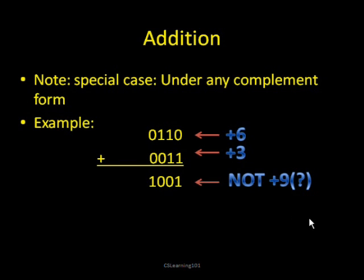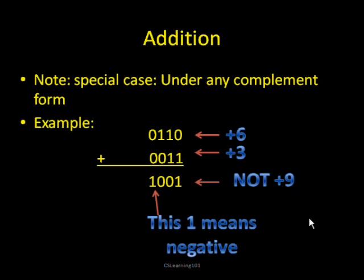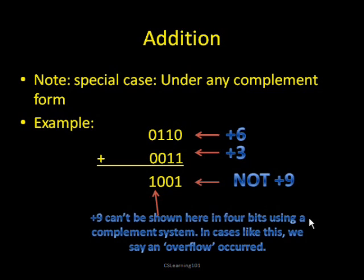There are some special cases with addition, and this is true for either complement form. Suppose the answer has the same number of bits as the two numbers being added, but the final answer is not correct — because remember, the first bit is always used for the sign. So this is not actually positive 9 like we would think with unsigned binary; it would be different in 1's or 2's complement. In cases like this, we say an overflow occurred, or an error of some kind. It's usually up to the computer's architecture to handle this.